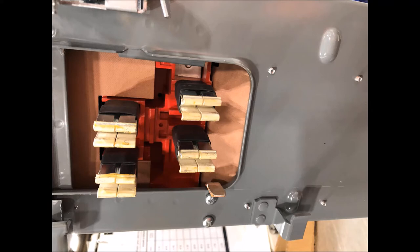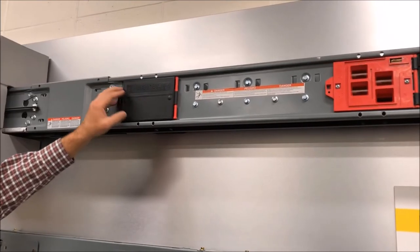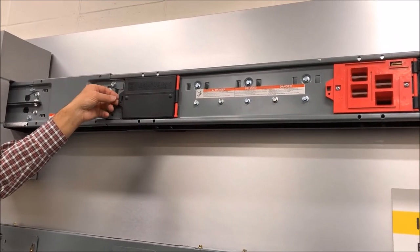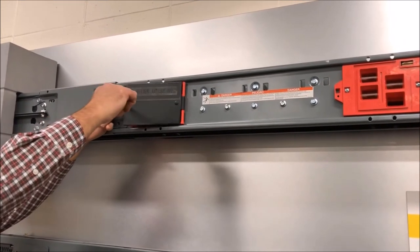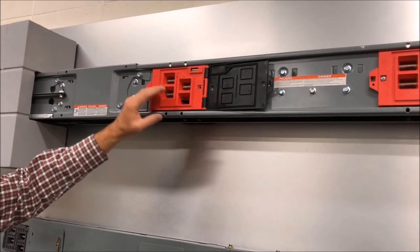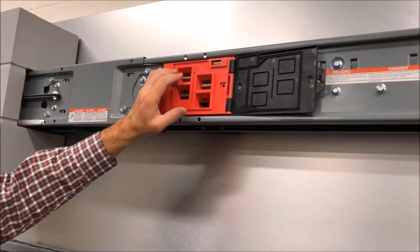Now that we have shown you the 4-pole and the 3-pole device, let's look at some I-Line busway. Here we have 3-pole I-Line busway. We'll open up the cover and you can see we have phase 1, 2, and 3, and then we have our ground phase.